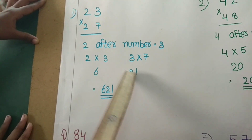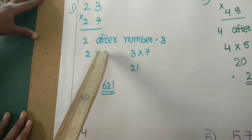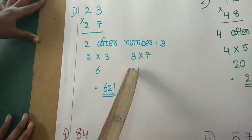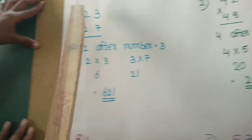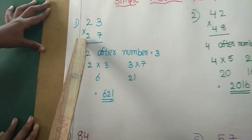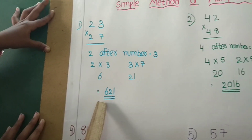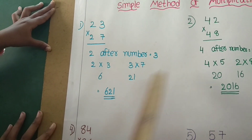3 into 7 is equal to 21. 6 plus 21 gives 621. So 23 into 27 is equal to 621.